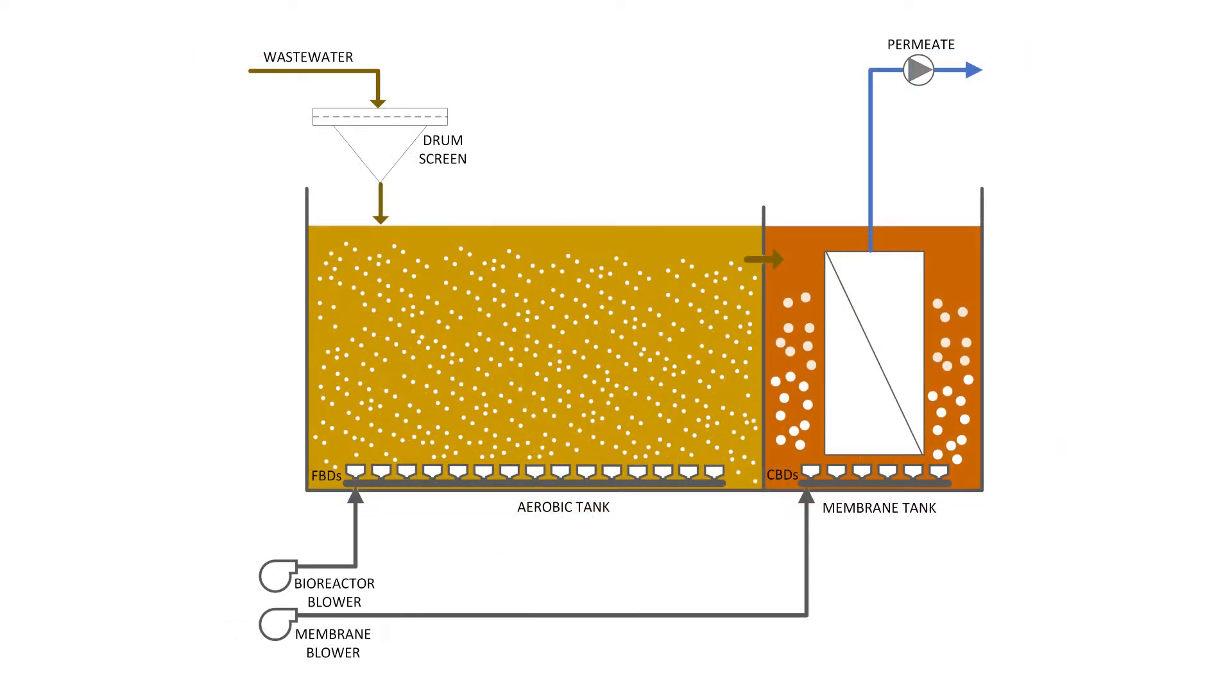During filtration, membranes are scoured through coarse bubble diffusers to mitigate fouling propensity and maintain acceptable permeability throughout operation.